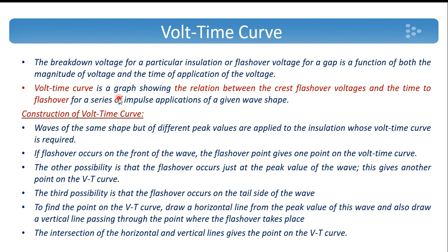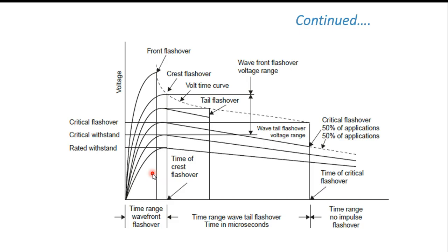The volt-time curve is a graph showing the relation between crest flashover voltages and time to flashover. For constructing the volt-time curve, waves of the same shape but different peak values are applied to the insulation and the flashover voltage is found out. Different waves with different peak magnitudes of the same shape are applied to the insulation and the time and voltage at which flashover occurs is measured. The flashover can occur at the front of the wave, at the peak point of the wave, or at the tail of the wave — three possibilities for flashover.